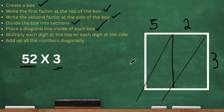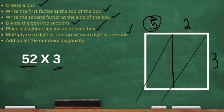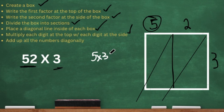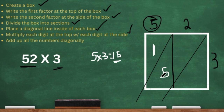Then it says we have to multiply each digit at the top with each digit at the side. So I'm going to start with the five and multiply it by the three on the other side. So we have five times three. Five times three is 15. 15 is a two-digit number. And as you can see in this box right here, you have two different sections. So I'm going to put the one there and the five there.